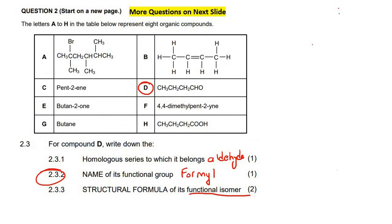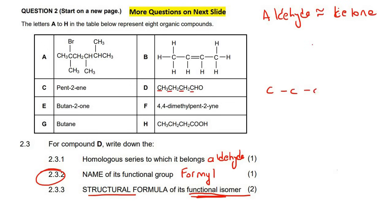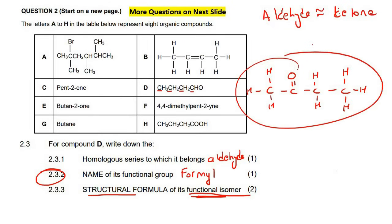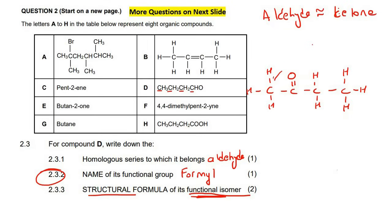Since compound D is an aldehyde, its functional isomer is a ketone. Count the carbons — there are 4. So just make a 4-carbon ketone. With a ketone, the double bond oxygen is somewhere in the middle, not on carbon 1 or carbon 4 — because then the double bond oxygen would be on the side, making it an aldehyde again. Fill in the hydrogens, and that is your answer.